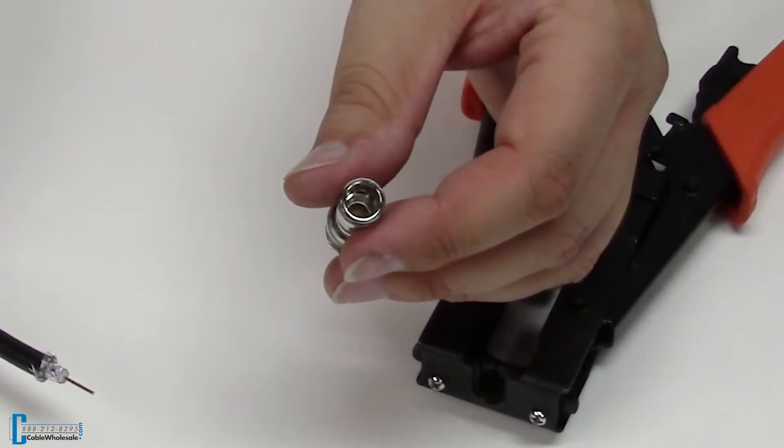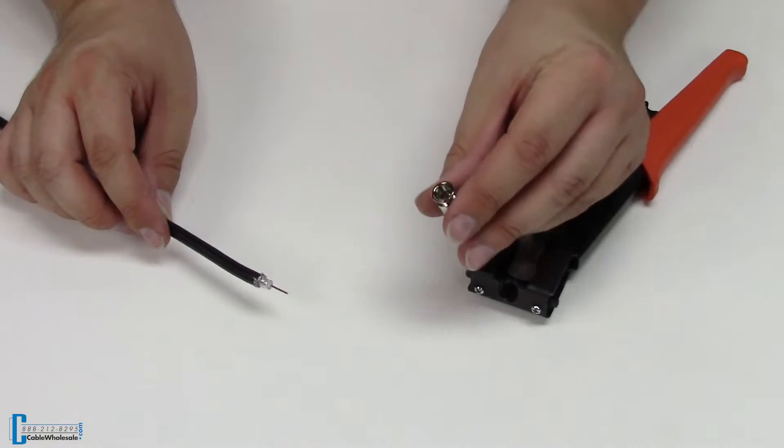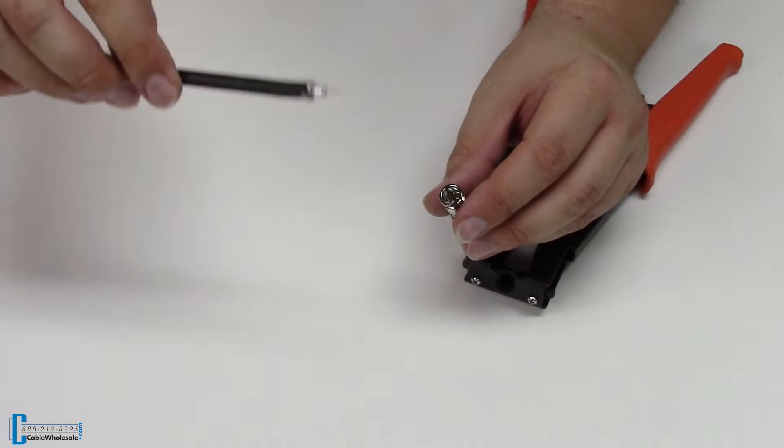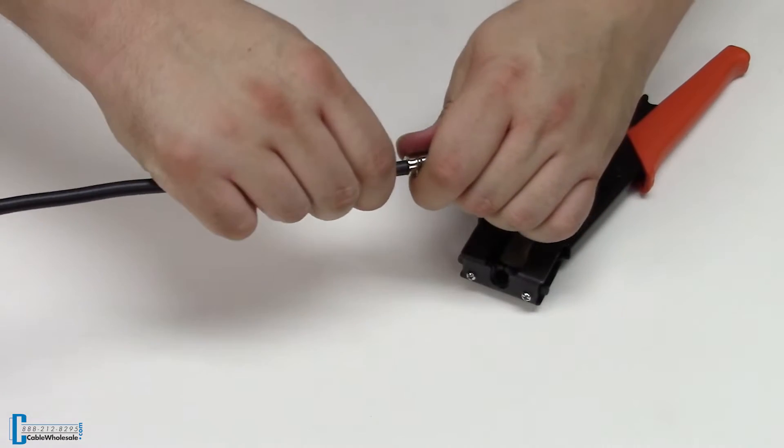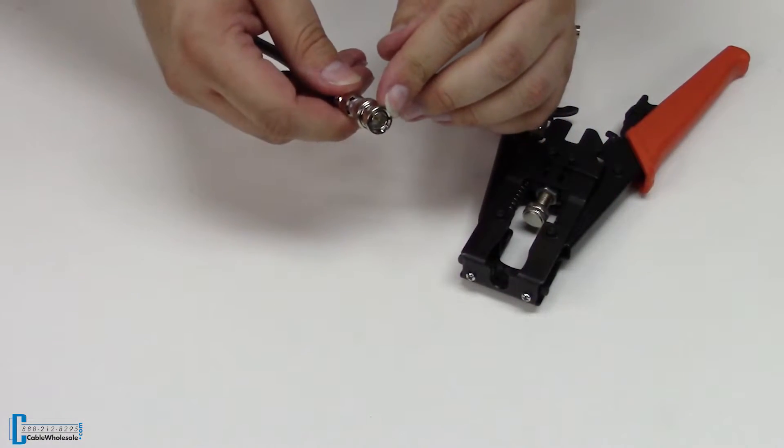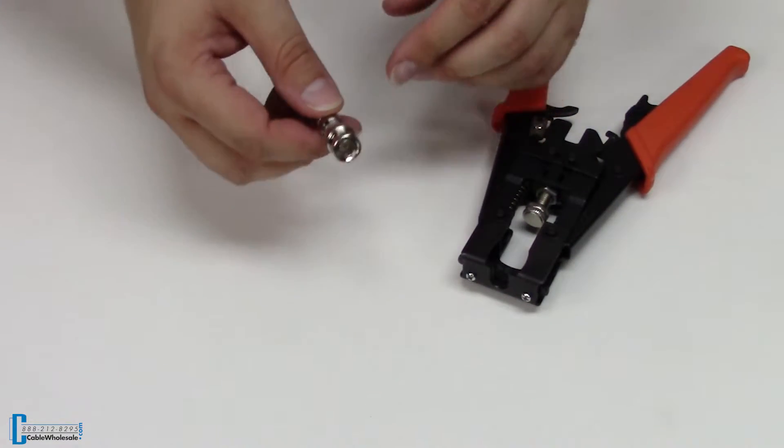If you can see the very little tiny hole inside there, you're going to put the copper wire all the way into that hole. The connector comes with the wire already going through there.